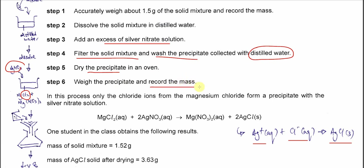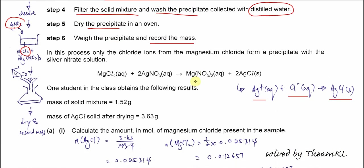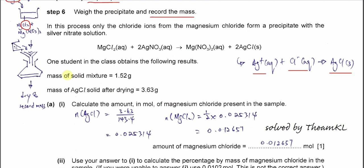Once we get the mass of the silver chloride, we get the moles, and once we get the moles, we can get the moles of the other compounds. So this is what the whole experiment is about. One student in the class obtained the following results: the mass of silver chloride after drying is 3.63 g, and the mass of solid mixture used is 1.52 g. We use these two values to calculate the moles.